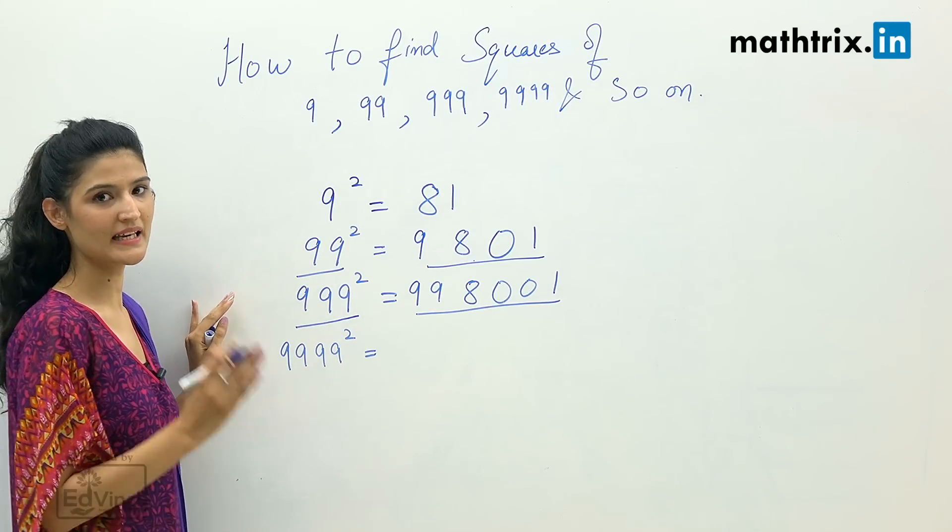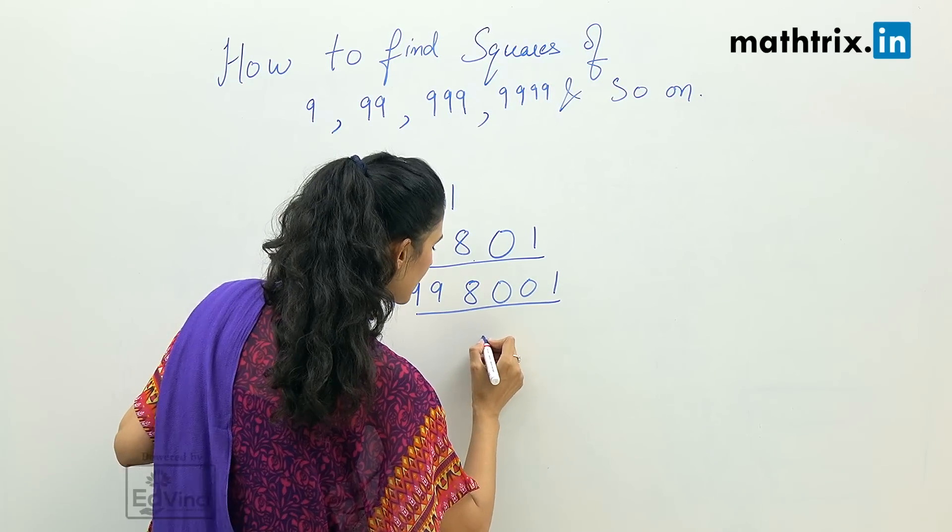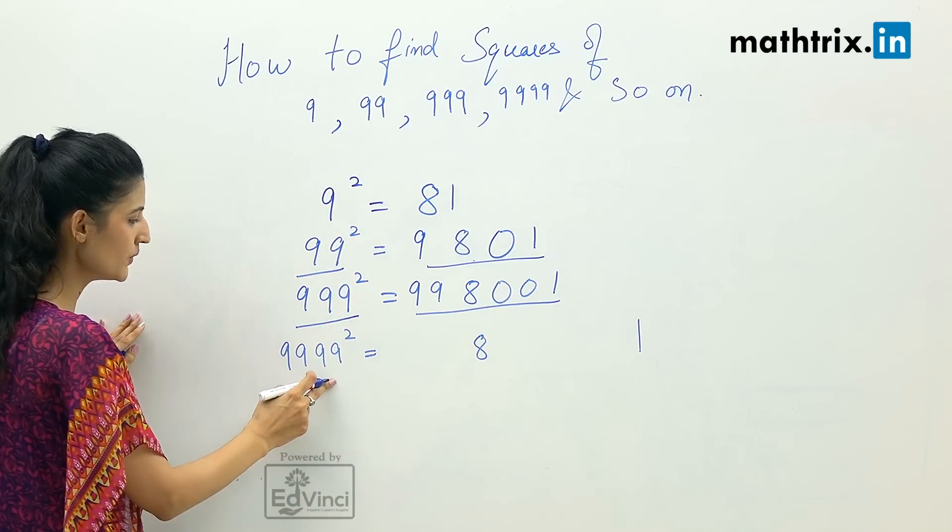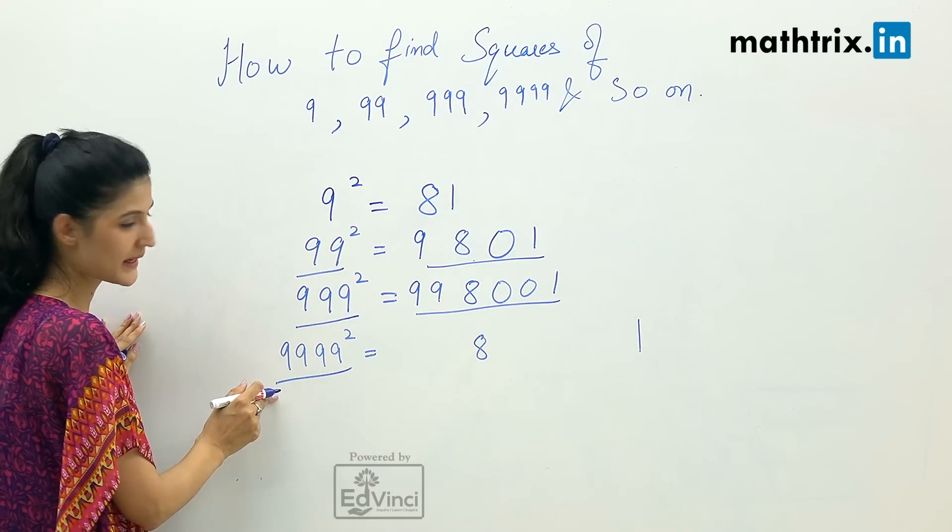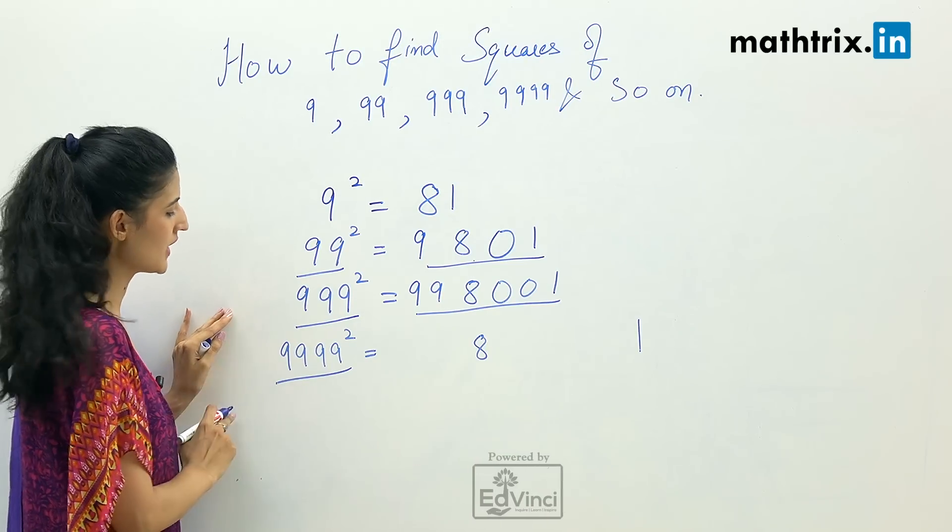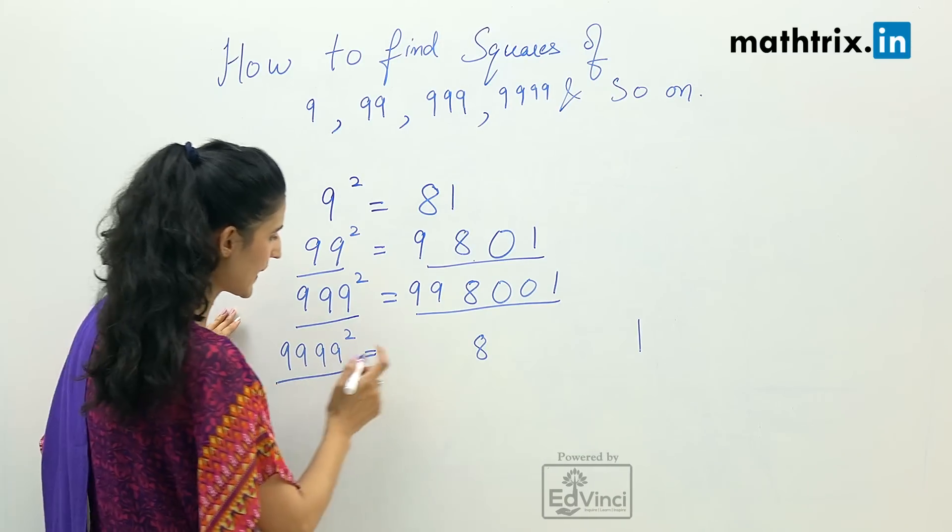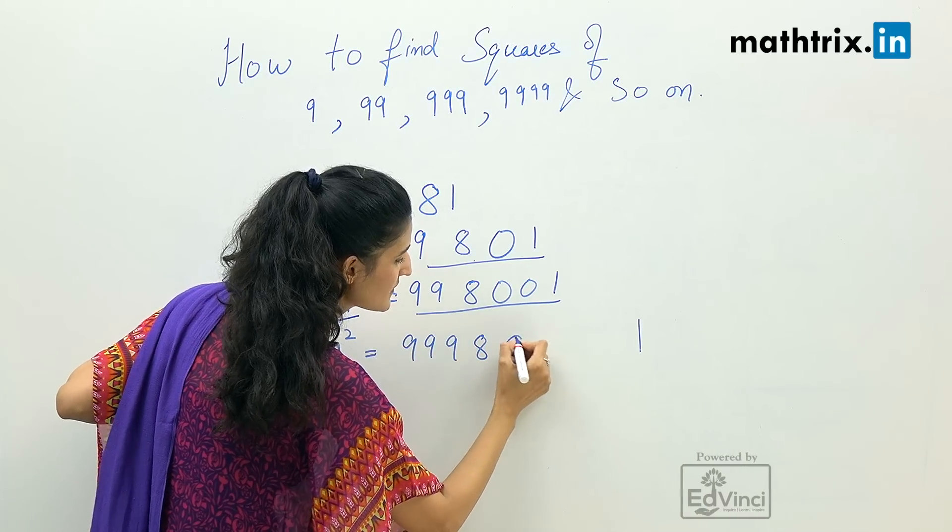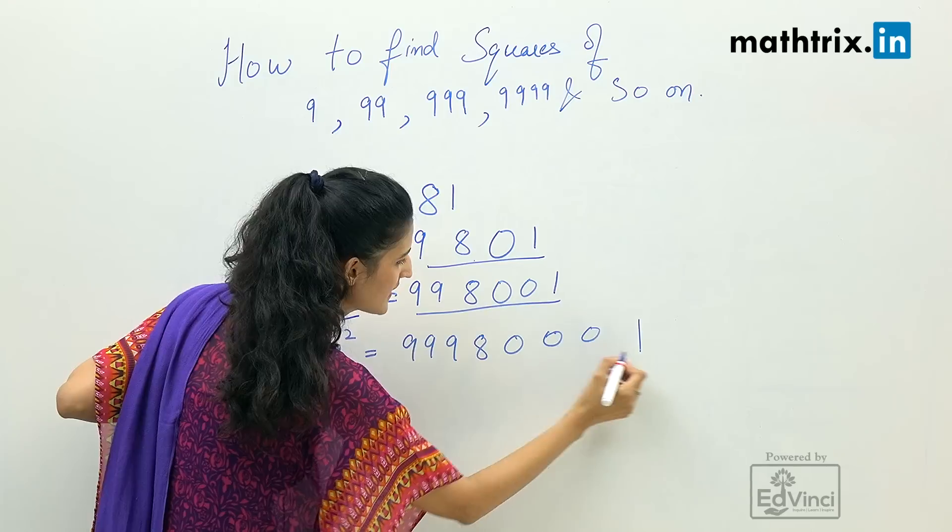Rule number 1: it must contain 8 and 1. We will write 8 here, we will write 1 here. Rule number 2: we will see the count of 9s we have. The count of 9s here is 4. We will take 1 count less, so our answer will be 99980001.